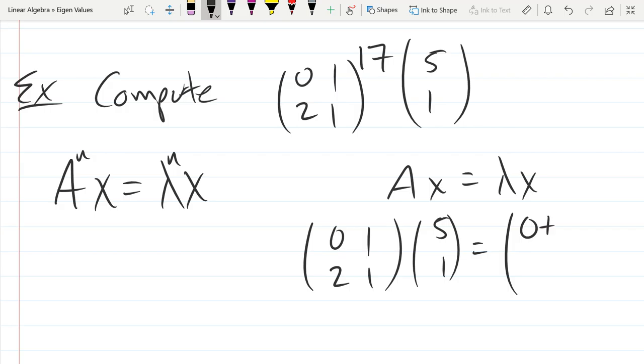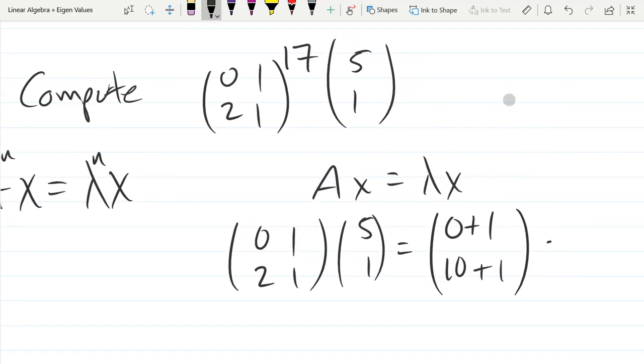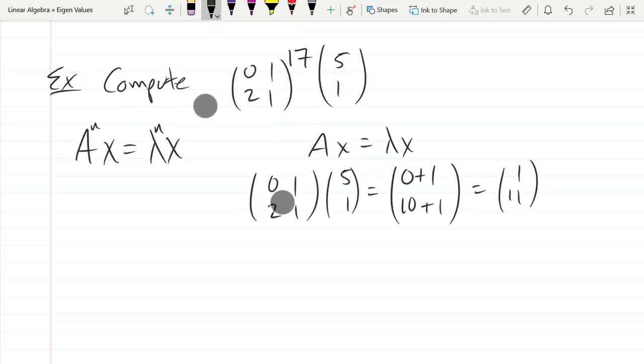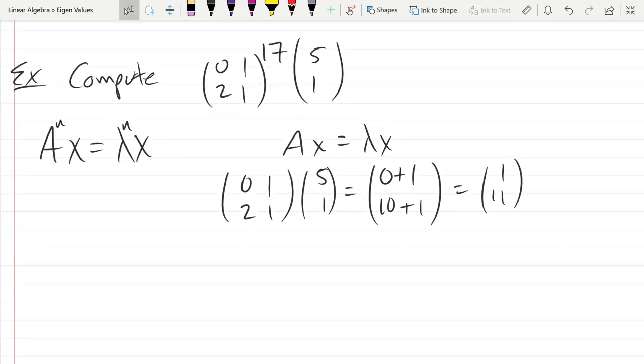So we're just going to multiply Ax. So 0 plus 5. Oh, 0 plus 1. And 2 times 5 is 10. Oh, it's not looking good. Oh, that's definitely not an eigenvector. Wow. So we don't have an eigenvector. We're going to have to work harder than just finding this lambda taken to the 17th power.